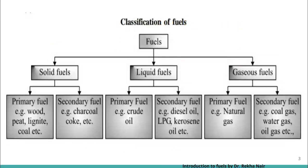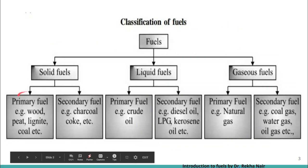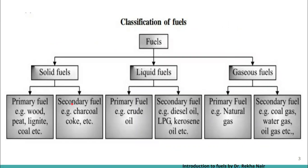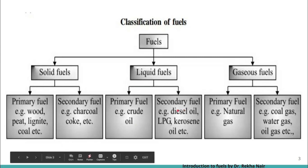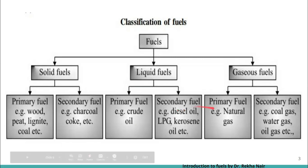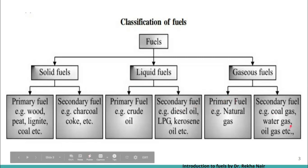Let us discuss the examples. The examples for primary solid fuels are wood, peat, lignite, etc. Whereas the secondary solid fuels are charcoal, coke, etc. If we talk about liquid fuels, primary liquid fuels are crude oil, whereas diesel oil and kerosene oils are examples for the secondary fuels. Natural gas is a primary gaseous fuel, and coal gas, water gas, oil gas, etc. are secondary gaseous fuels.